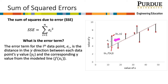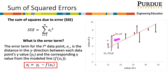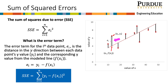You can see in the graph that the error term highlighted is represented by the length of the black line on the graph. The error term is calculated by taking the difference of the y value of the ith data point and the y value of the modeled line for the same x sub i. Therefore, the error term e sub i is the same as the y sub i term subtracted by the f of x sub i term for each point. When we substitute this in for e sub i, we get the version of the SSE equation first shown.